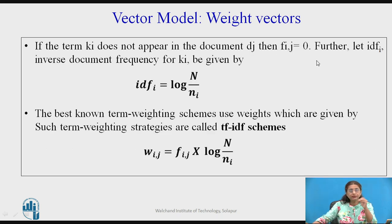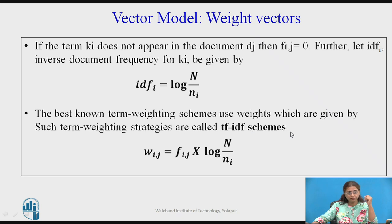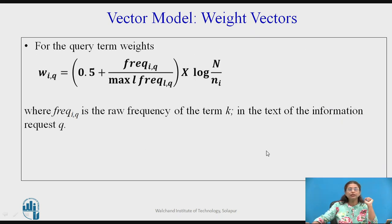The inverse document frequency is log(n / ni), where ni is the number of documents in which keyword Ki is present. Once you have identified the term frequency and inverse document frequency, there are multiple schemes for weighting; one of them is the TF-IDF scheme. Normalized frequency multiplied by IDF gives the weight vectors. Once we have created weight vectors for the documents, in the same manner we can create them for the queries and then find the degree of similarity.